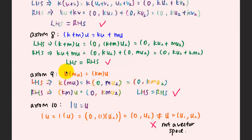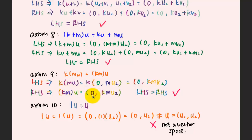For axiom number 9, the multiplication of k with m times the vector u should equal km times u. Working from the left-hand side: m multiplied with u gives 0 and mu2 (first entry 0, second entry mu2 by the scalar multiplication rule). Then k multiplied with that gives 0 and k times mu2. On the right-hand side, km is a product of two scalars treated as a single scalar, giving 0 and km·u2.